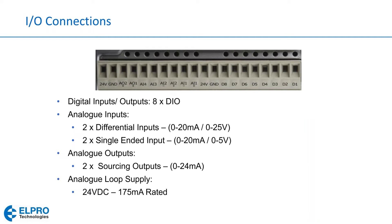For the I/O connections for 4 to 20 milliamp inputs and outputs and voltage signal inputs and outputs: first, we have 8 DIO labeled D1 through D8. They can function as inputs or outputs, but obviously not at the same time. Each digital point has an LED right next to it, so you can look at the LED to see whether the I/O point is active or inactive.